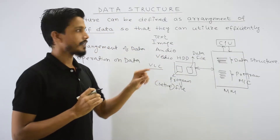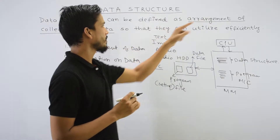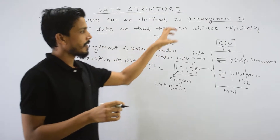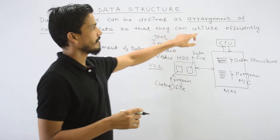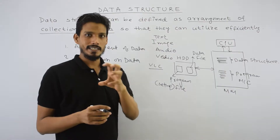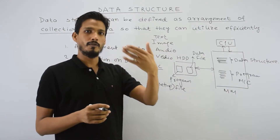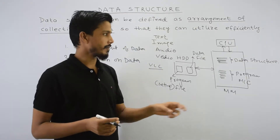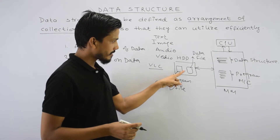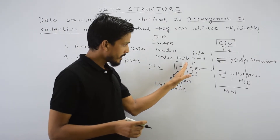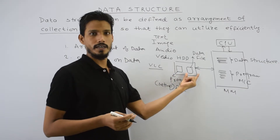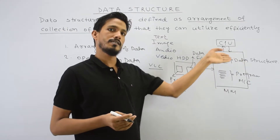Let's revise the definition: data structure can be defined as an arrangement of collection of data, so that they can be utilized efficiently. Whatever data is arranged in your main memory so that it can be utilized efficiently — that means whatever operation is performed, we can arrange the result to get our optimal, best result. This is called utilize efficiency. One important thing: when data is stored in secondary storage, we call it a database. When it comes to execution form in main memory, we call it data structure.